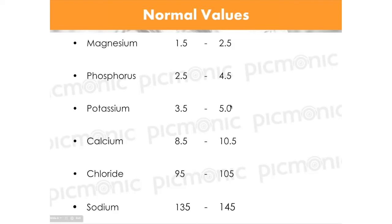That completes part one of Electrolytes Made Easy. Before going to part two, make sure you review the 10 Picmonics we just covered: magnesium, hypomagnesemia, hypermagnesemia, magnesium sulfate, phosphorus, potassium, hypokalemia, hyperkalemia, parts of an ECG, and digoxin toxicity. To find these in the learning system, click Browse on the left navigation bar and search by course, body system, book, or board exam.